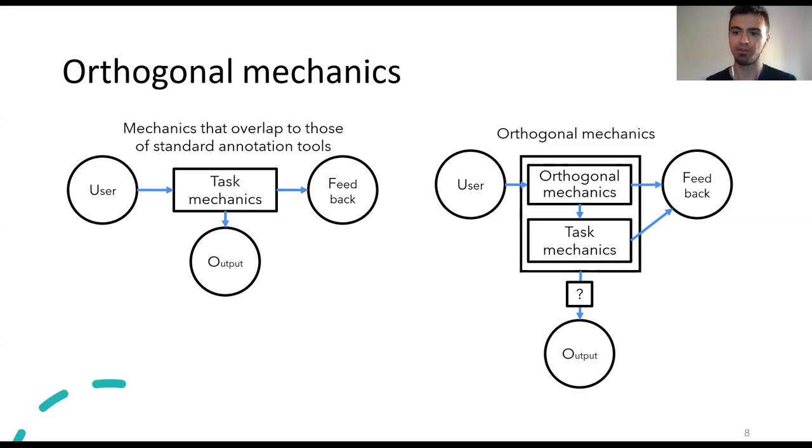But when orthogonal mechanics are introduced, then users interact with some surface mechanics whose effects are reflected to the underlying task mechanics. And we are interested in understanding what exactly happens when this is the case.